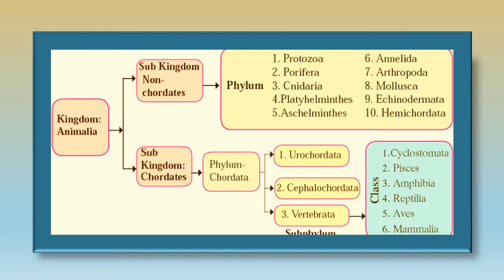Chordates have only one phylum — Chordata — broken up into three sub-phylums: Urochordata, Cephalochordata, and Vertebrata. The sub-phylum Vertebrata is again subdivided into six classes: Cyclostomata, Pisces, Amphibia, Reptilia, Aves, and Mammalia.